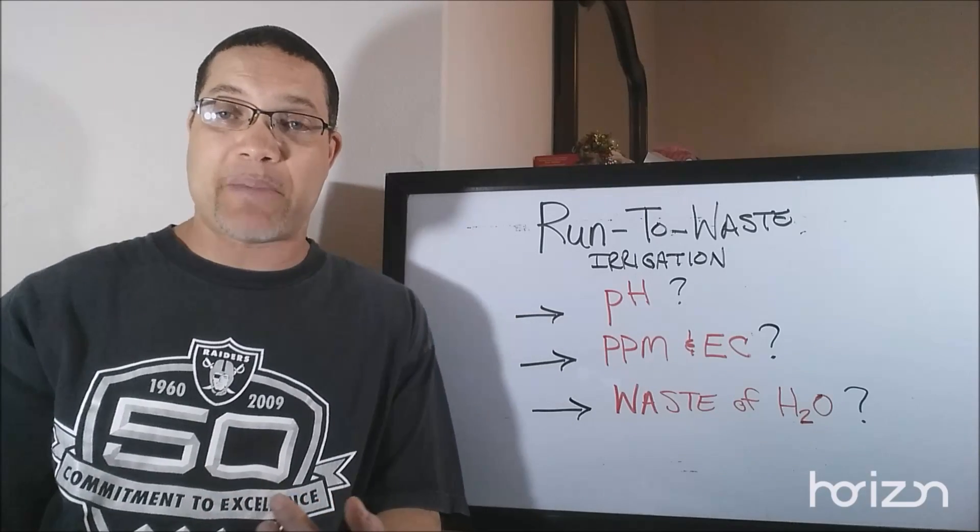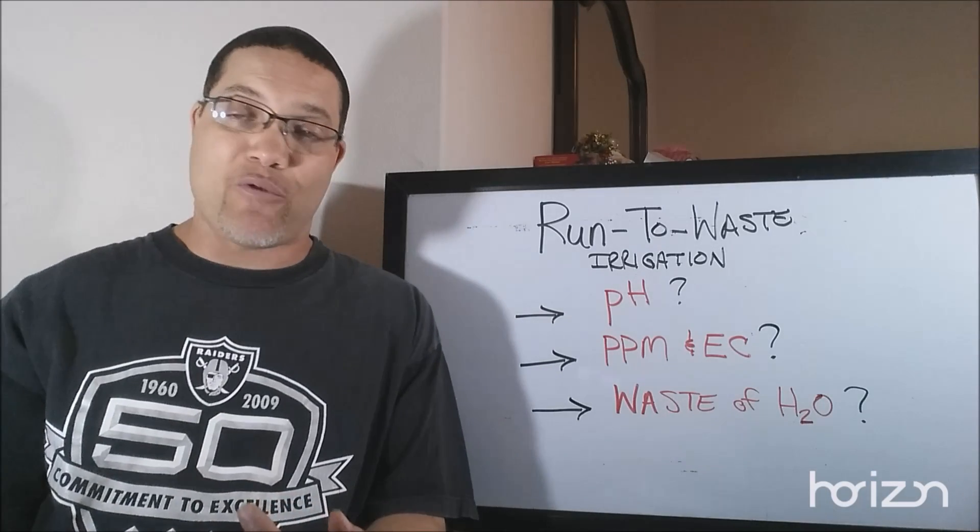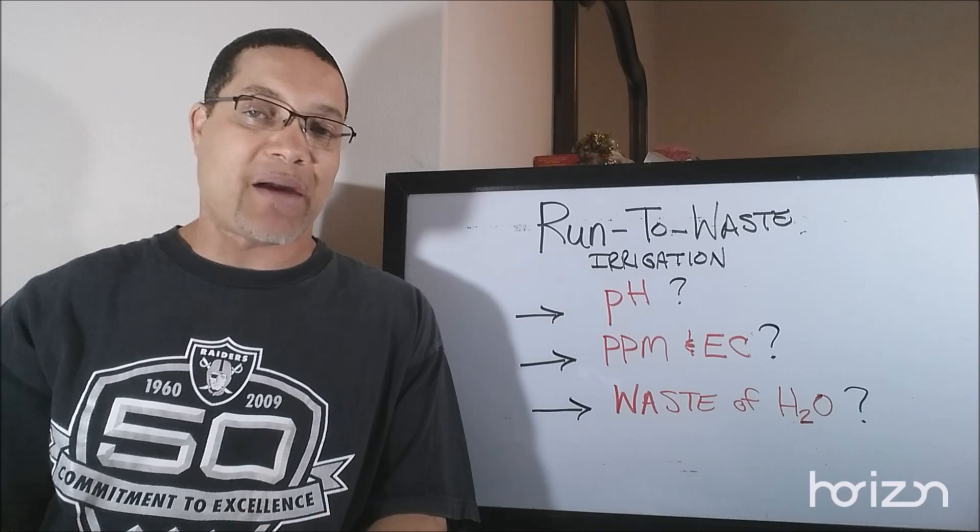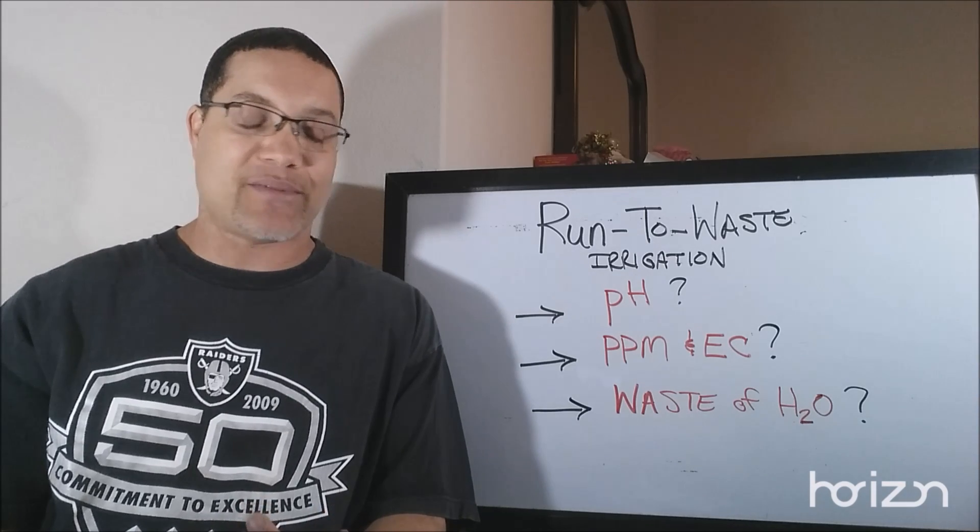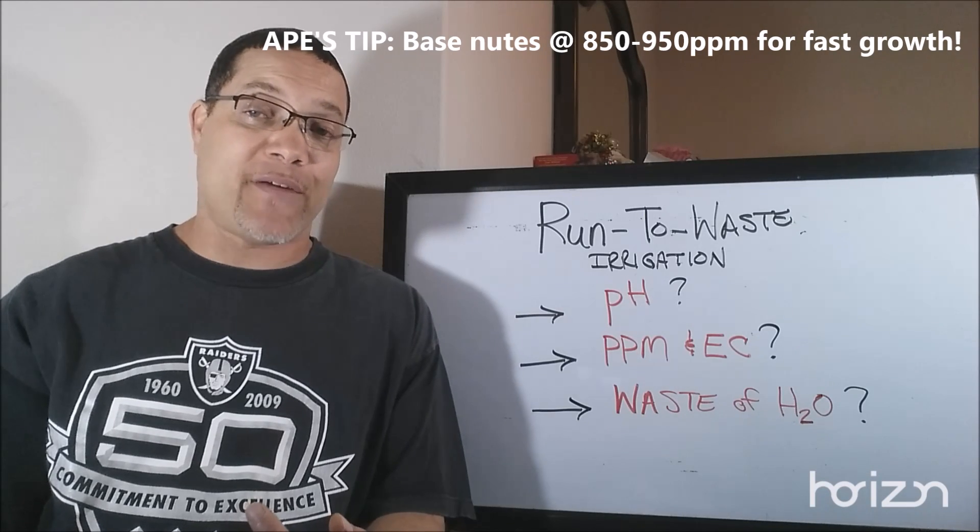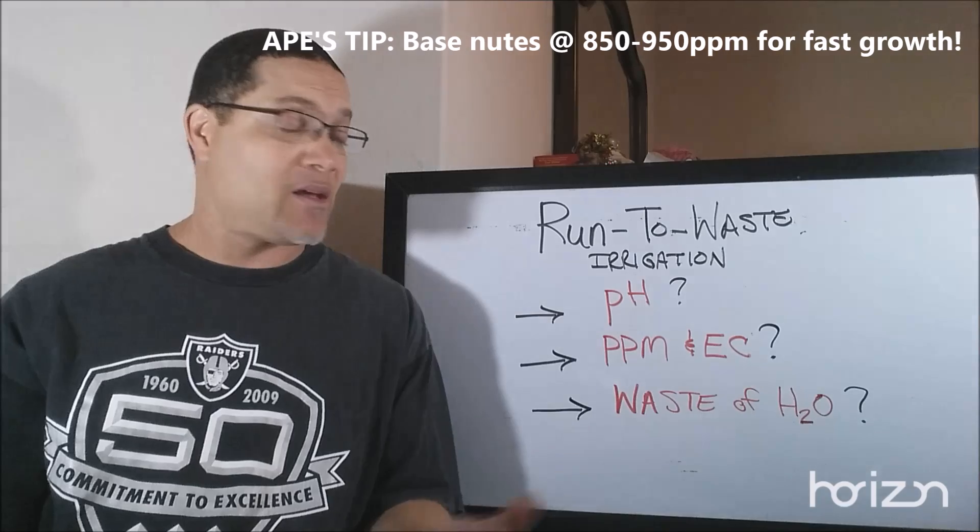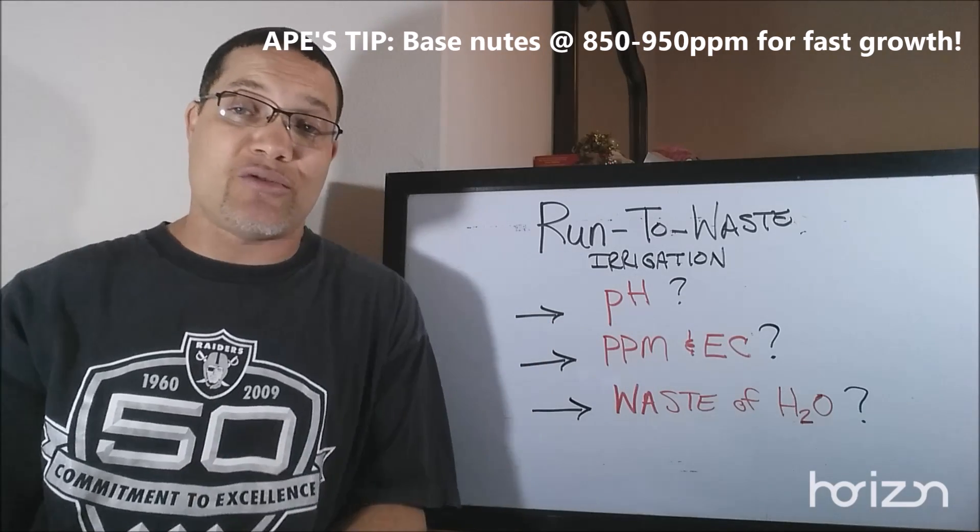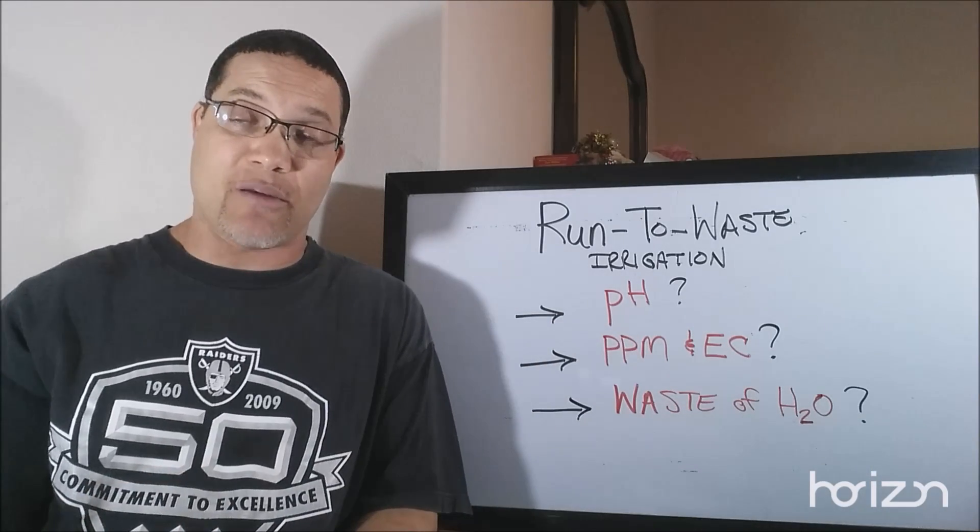I preferably like my PPMs to start, before I use any additional additives, I like my base nutrient to be somewhere between 850 and 950 PPM, that's parts per million. And those of you that use EC, you'll just have to convert those numbers.